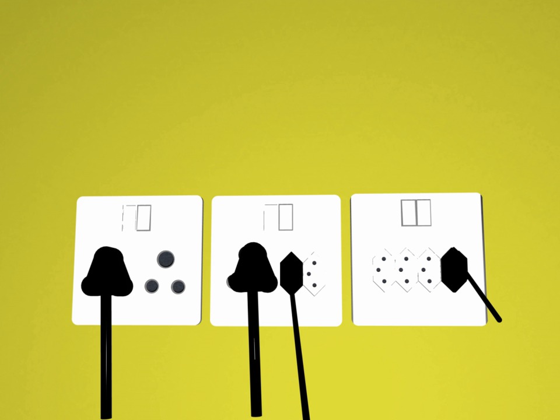In common with the Europlug there is an insulating sleeve around the base of the line and neutral pins.